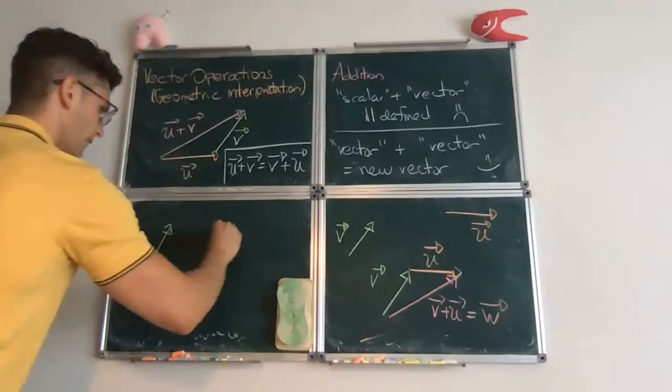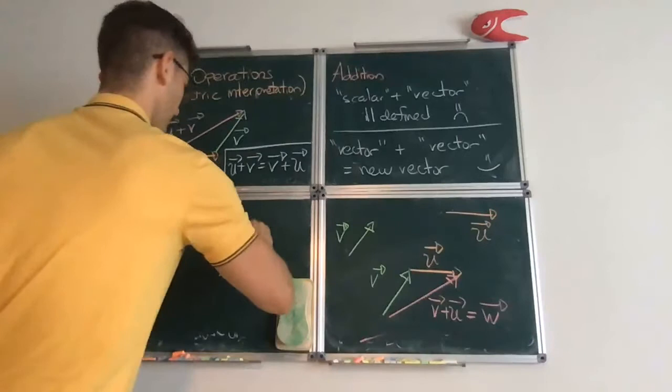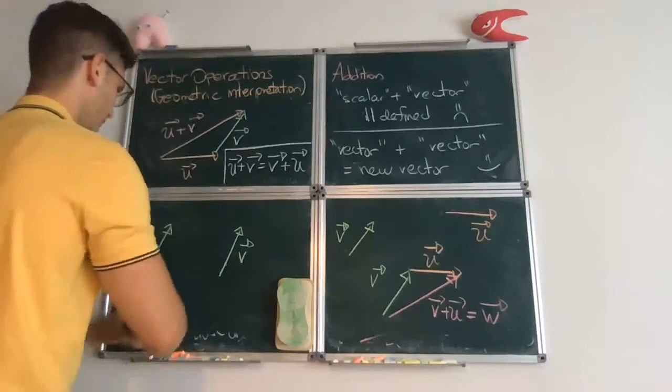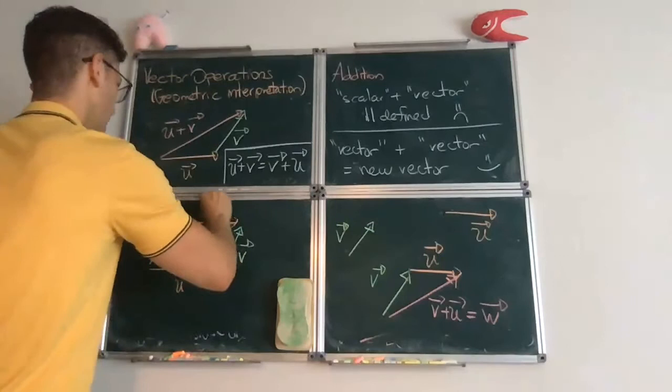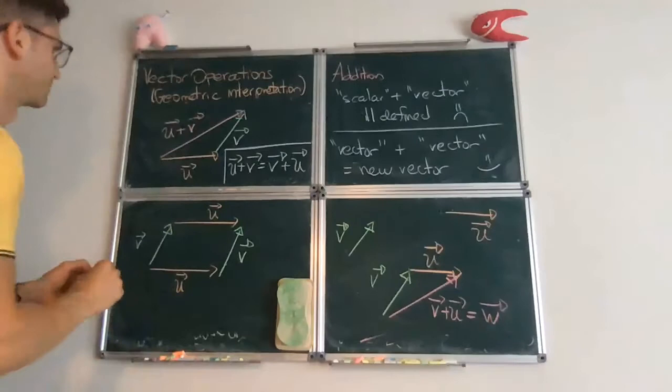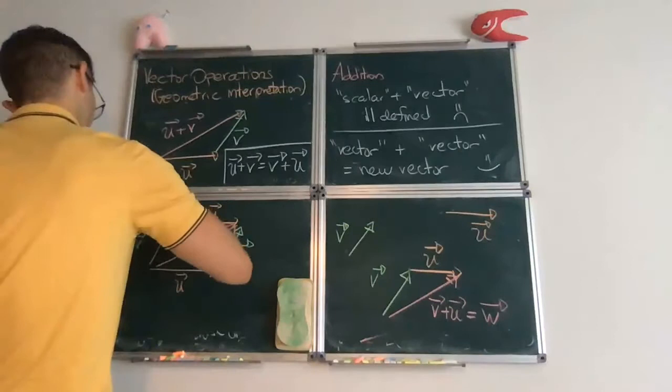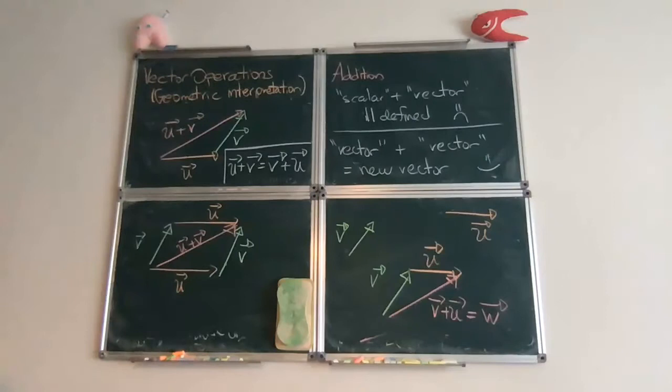You can just notice that you can put a v here and then you have a u here. Notice that one of the diagonals is u plus v, or v plus u, which again are the same.